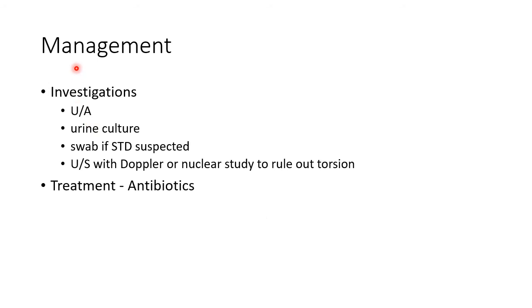A major differential diagnosis of epididymitis is testicular torsion. Investigations like urine analysis, urine culture, and swab if a sexually transmitted disease is suspected should be done. Ultrasound with Doppler or nuclear study should be done to rule out testicular torsion. It is treated with antibiotics.